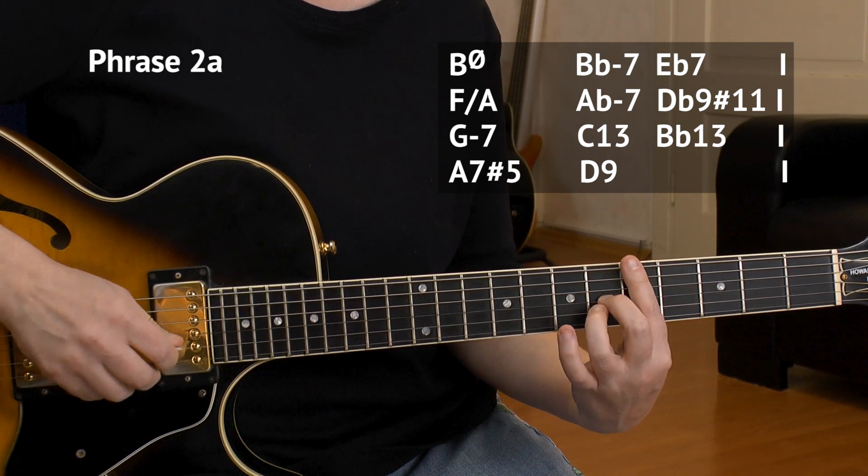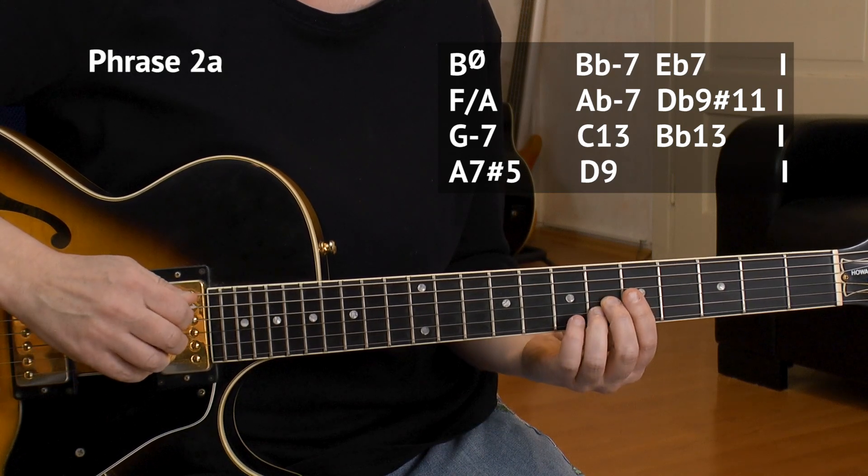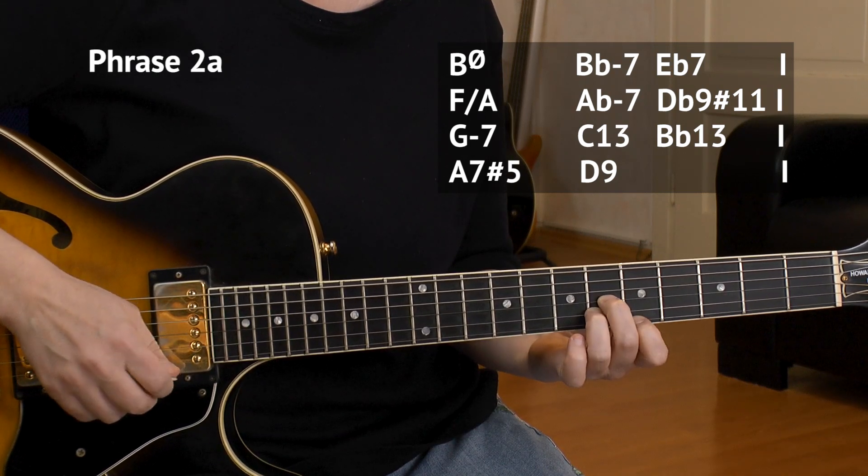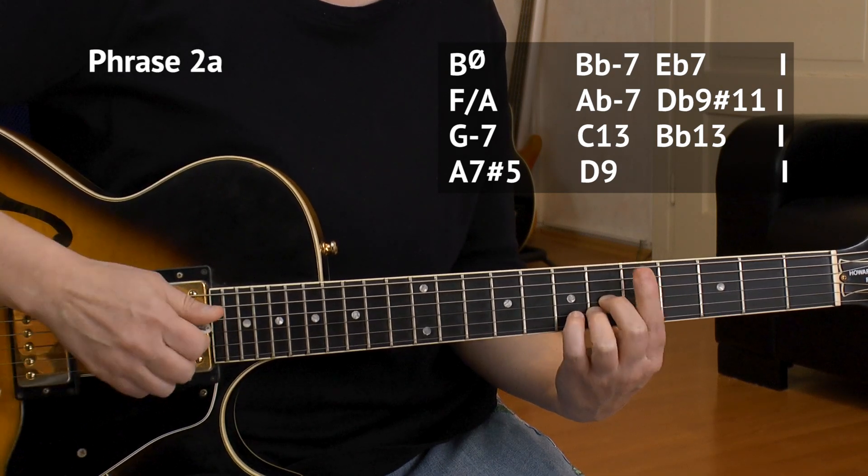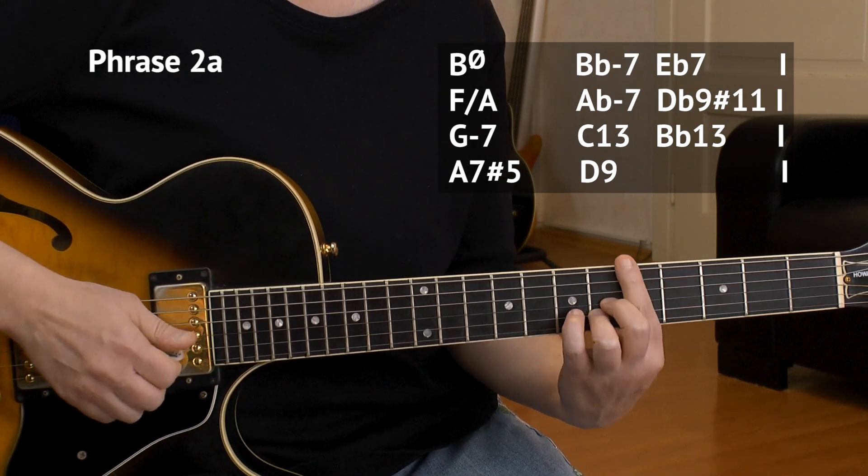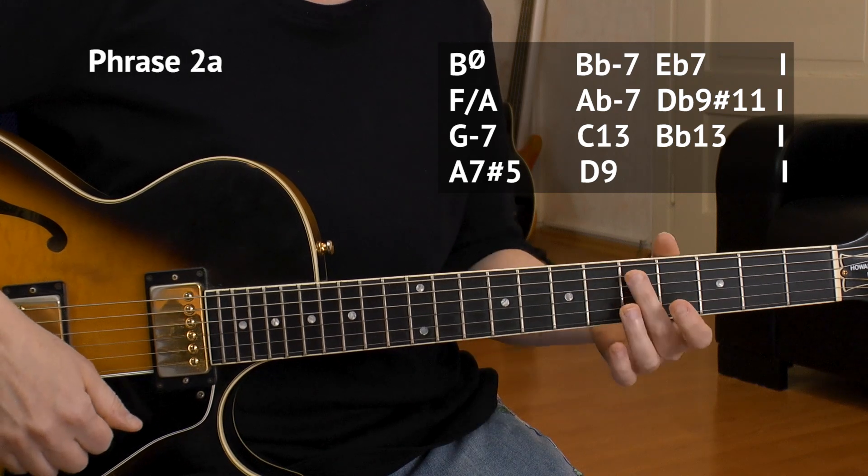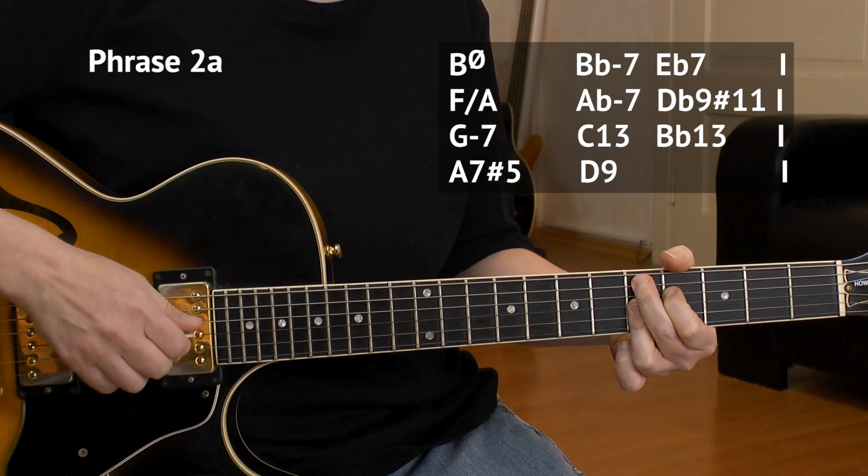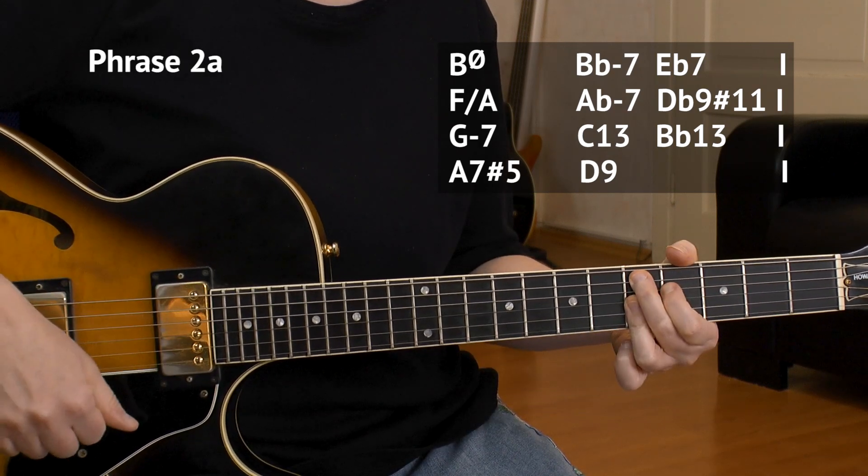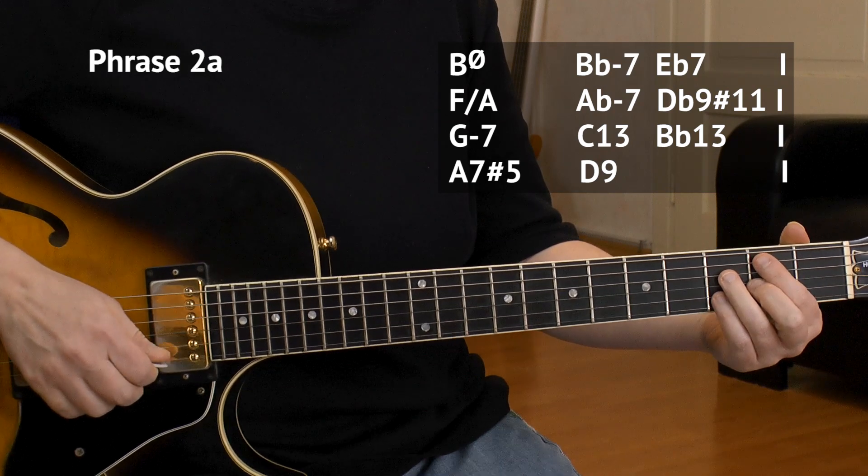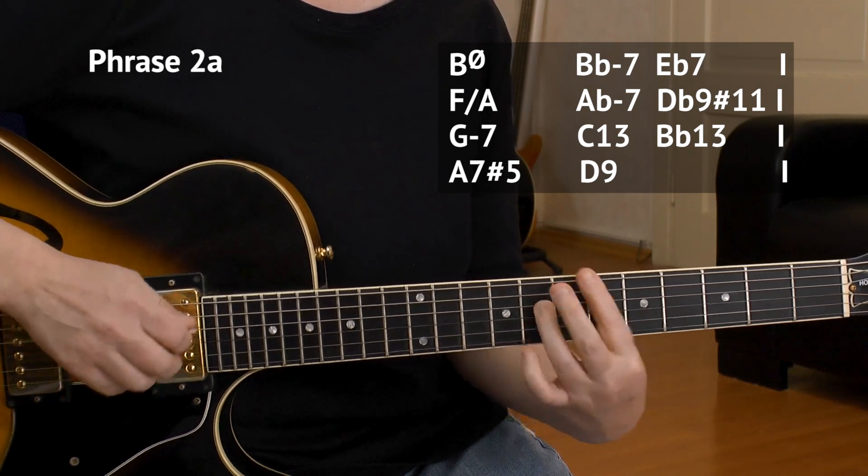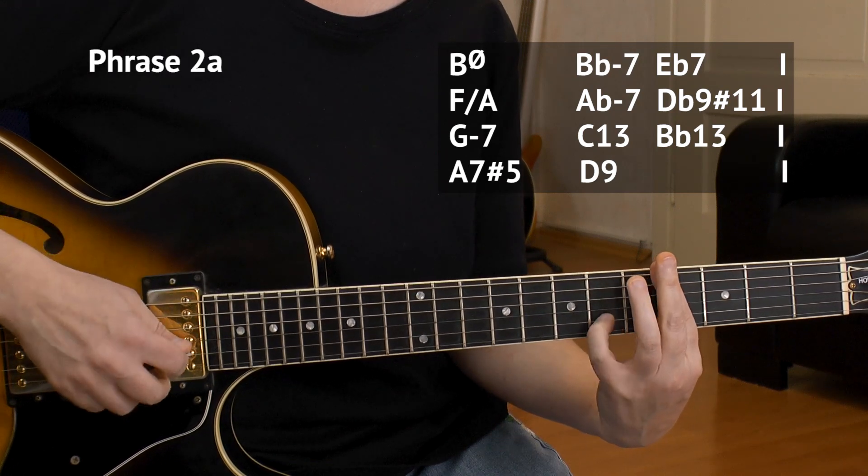And to A7 sharp 5. That's why I keep my finger here, because we could play that with the open A string as well. Five, six of G, six of B, and five by barring of E. And I strum over it. Don't strum over the A string. That's the avoid note. And the D9, we know that chord already. Two strums. And that was the second phrase. I'm going to play it slowly for you now.